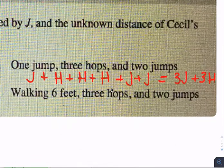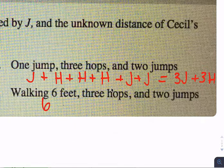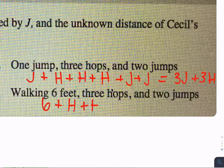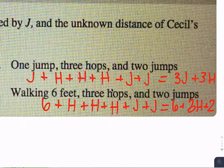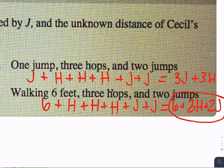And then we have walking six feet. That would be six plus our three hops, hop plus hop plus hop, and two jumps, plus J plus J. All together, we have six plus our three H's plus our two J's. That is writing algebraic expressions.